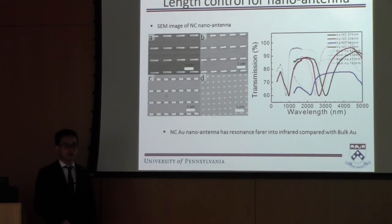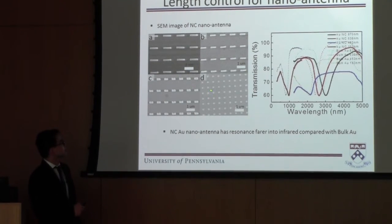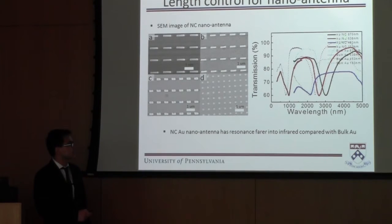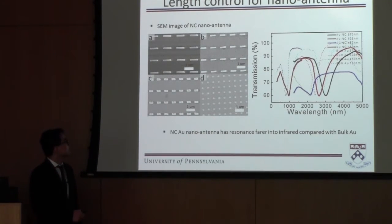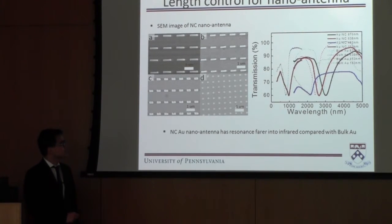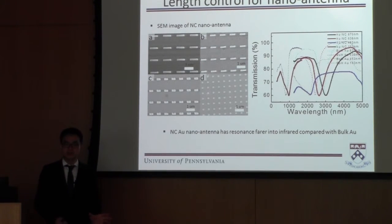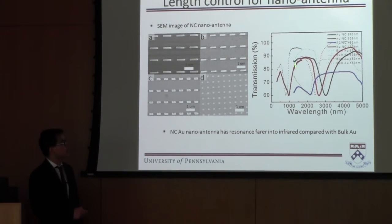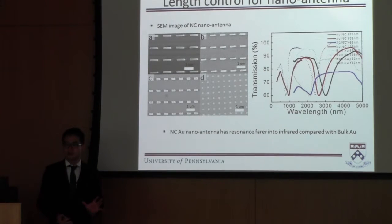We also show that we can fabricate nano-antennas of different lengths using our method. These four samples have lengths varying from 163 nanometers to 817 nanometers. Their resonance signals are plotted here as solid lines, varying from near-IR at 1,000 nanometers to mid-IR at 3,000 nanometers. We also fabricated bulk gold nano-antennas by traditional e-beam lithography, with resonances plotted as dashed lines for comparison. We can see they are very close, demonstrating that our method achieves comparable performance.